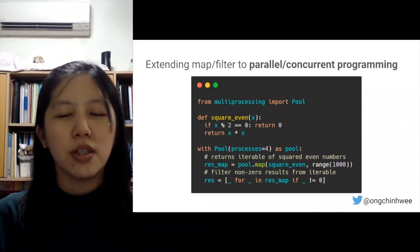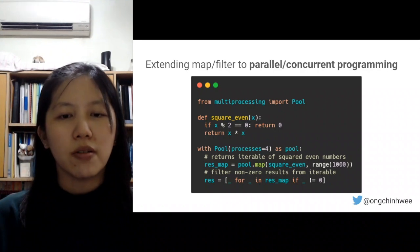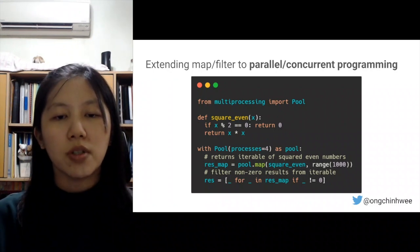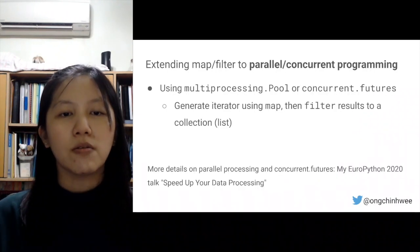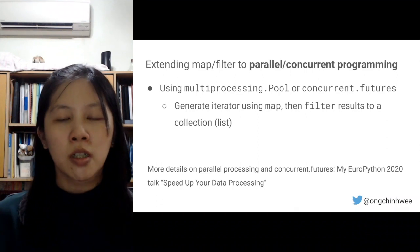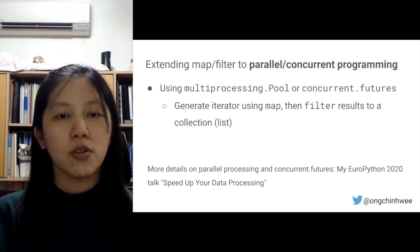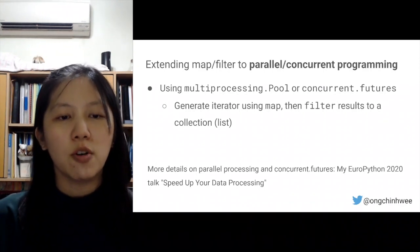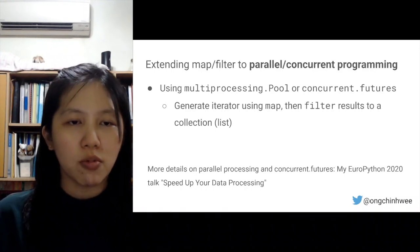We can extend map and filter to parallel programming using the multiprocessing module. In this scenario, we create an iterator using map, then after getting our results, we do filtering to a collection or list. We can use multiprocessing Pool, or also concurrent futures. For more on that, check out my EuroPython 2020 talk on data processing.